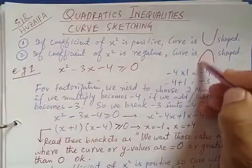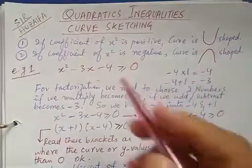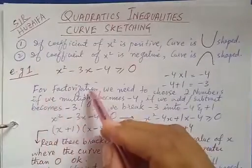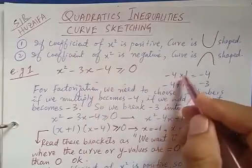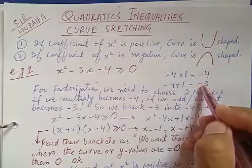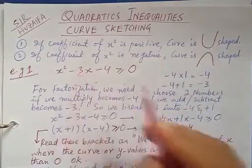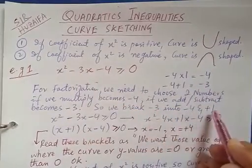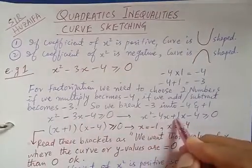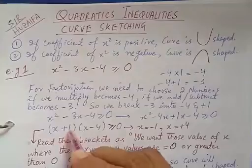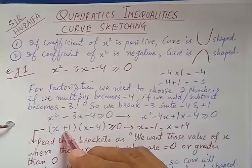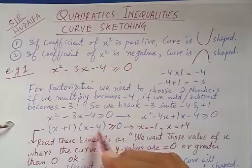In order to factorize this equation, we need to choose two numbers such that when multiplied they give minus four, and when added or subtracted they give minus three. So we break minus three into minus four and plus one, take x common from the first two terms, and we get two brackets: x(x+1) and (x-4).